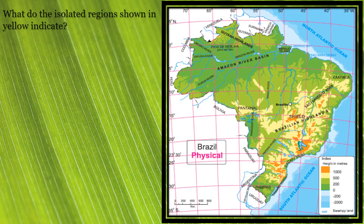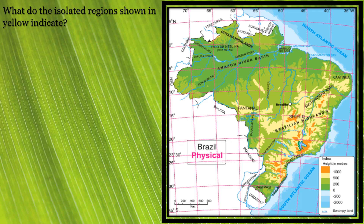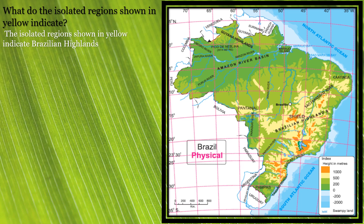Next question: what do the isolated regions shown in yellow indicate? Plateaus are highlands higher than the surrounding land. The isolated regions shown in yellow indicate the Brazilian highlands — also referred to as the Brazilian plateau or Brazilian shield.